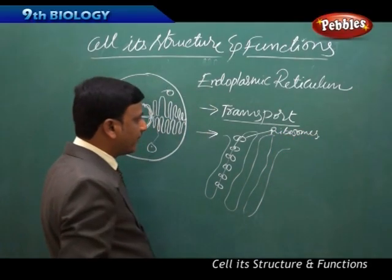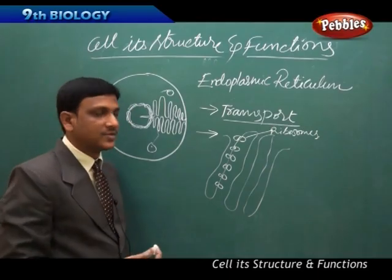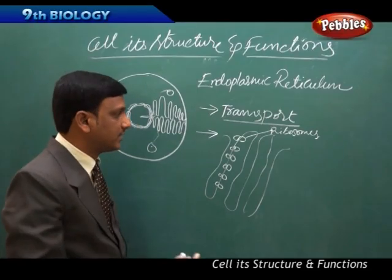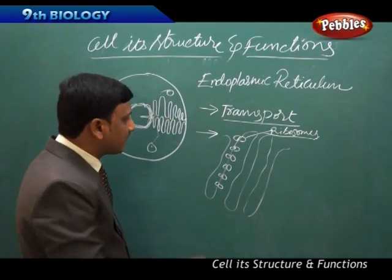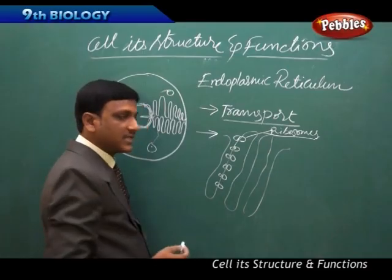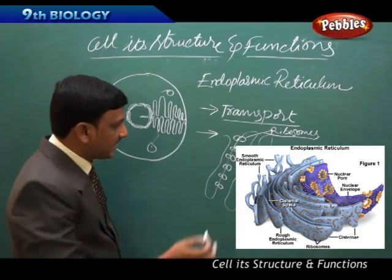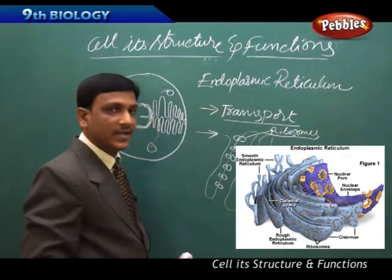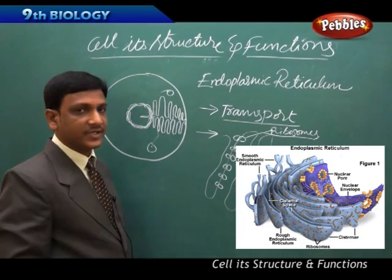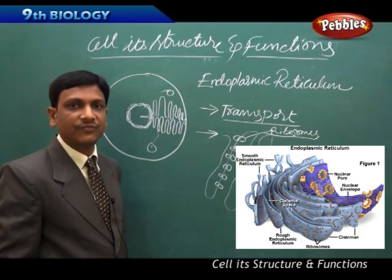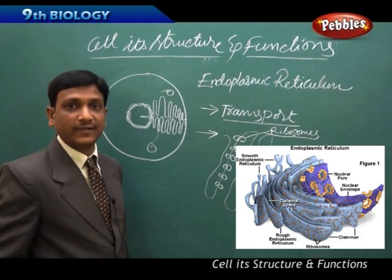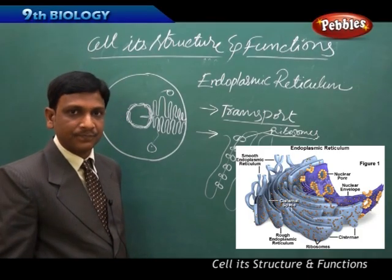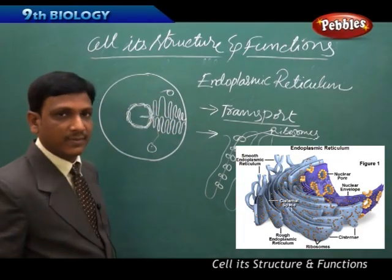Ribosomes can be compared to machines that prepare materials like proteins. Proteins are synthesized by the ribosomes. These ribosomes are located on the endoplasmic reticulum, which acts like a factory where the machines — ribosomes — prepare proteins. Proteins are very important for the growth of the cell, for repair, or for the formation of a new cell, so ribosomes continuously synthesize them.